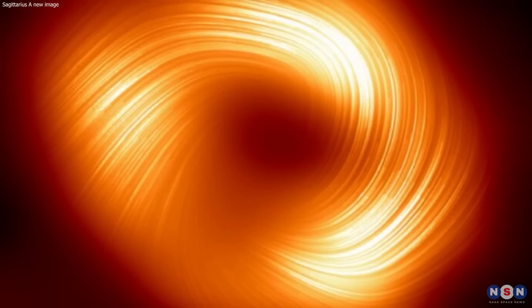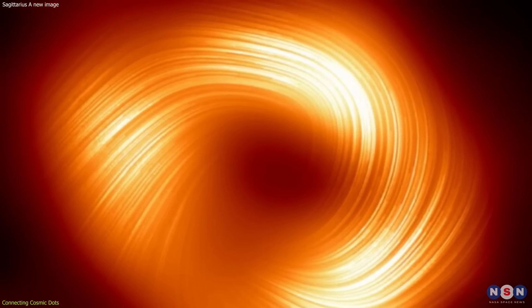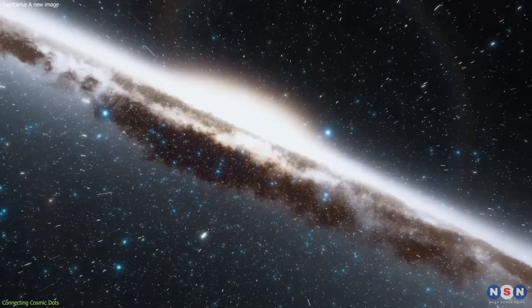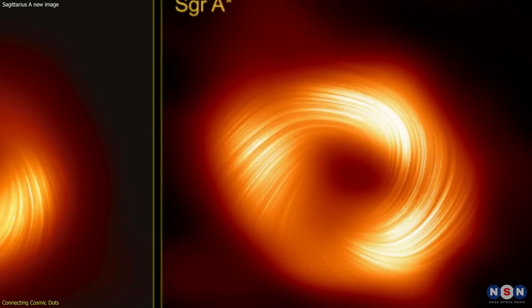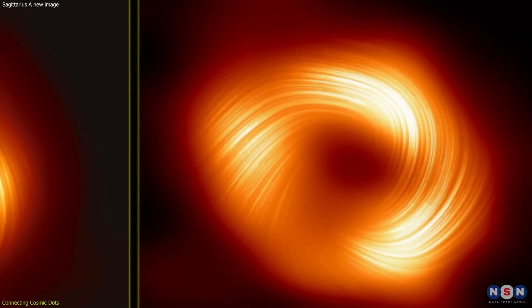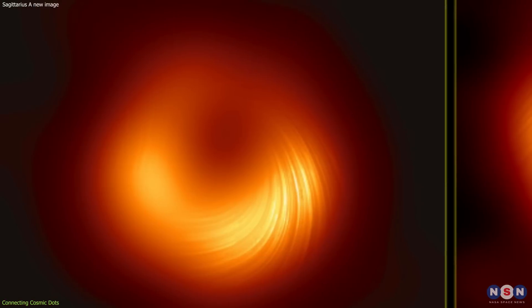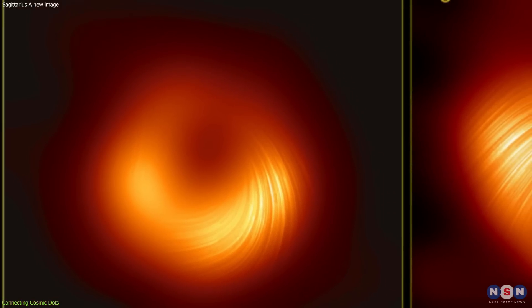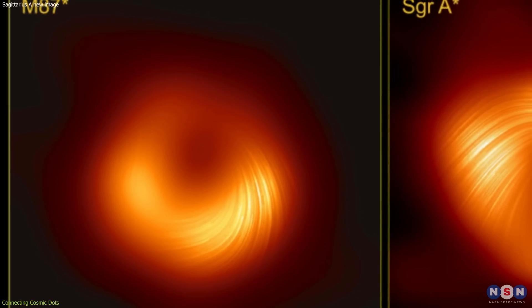The telescope's revelations about Sagittarius A star have far-reaching implications, extending beyond our Milky Way to the broader universe. The comparison between the magnetic field structures of Sagittarius A star and M87 star, another supermassive black hole imaged by the EHT, is particularly illuminating.